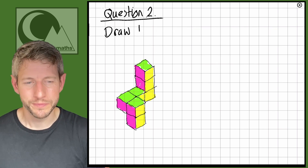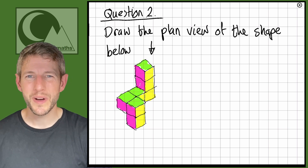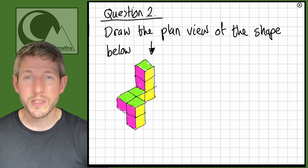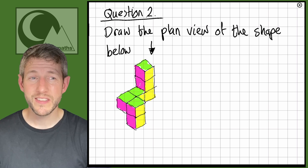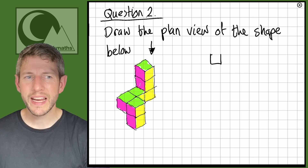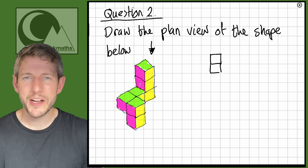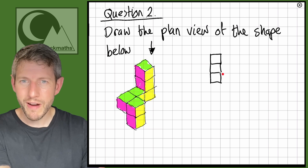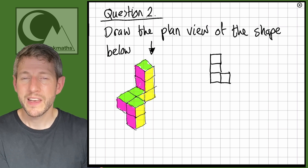Question two says: draw the plan view of the shape below. The plan means the view from above, so we're looking at the green squares. It's always helpful to shade them in yourself. We've got a square at the top, and then — imagining this shape has been twisted to the front — directly below that another green square, then another green square below that, and then with the twist the last green square is to the side. So what we get is an L shape.